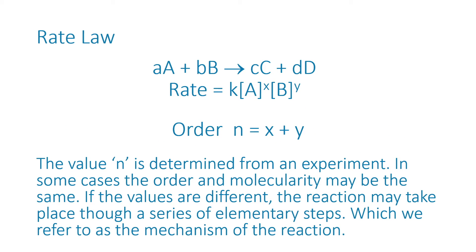The rate law here is rate equals k times A raised to x and B raised to y, and n is referred to as the order of a reaction. When we compare it to the law of mass action, we use the word molecularity. If the order of a reaction and the molecularity are the same, there is no mechanism involved — it's a one-step reaction. On the other hand, if the order and the molecularity are different, then a mechanism is involved, meaning the reaction takes place through a series of elementary steps.